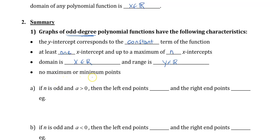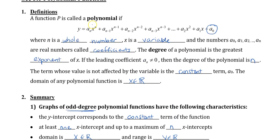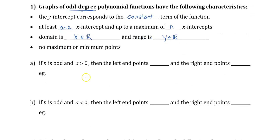For odd-degree polynomials, the domain is all real numbers and the range is also all real numbers. There's no maximum or minimum because the graph goes on and on in both directions. So if n is odd — referring to the highest exponent — and the coefficient is positive, then the left end points down and the right end points up. A simple example is y equals x, where the exponent is odd and the coefficient is positive.